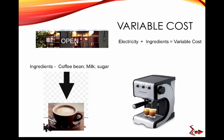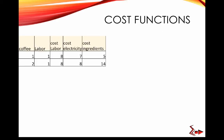If you produce no coffee and don't open the cafe, variable cost is zero — you use no electricity, make no coffee, and spend nothing on ingredients. Now let's think about the cost function. If we produce one cup of coffee, we hire one person at $8 in wages. Electricity costs $7 and ingredients cost $5 — these are all the variable costs: labor, electricity, and ingredients.